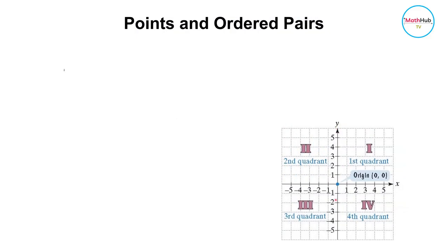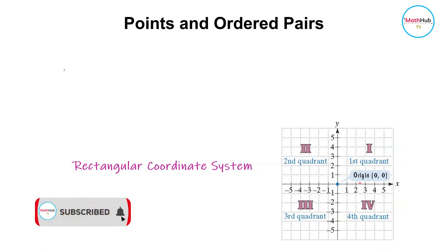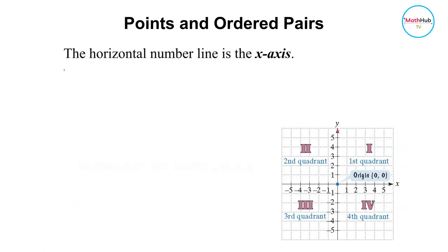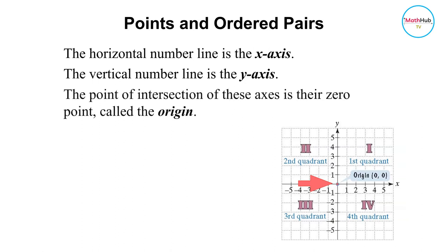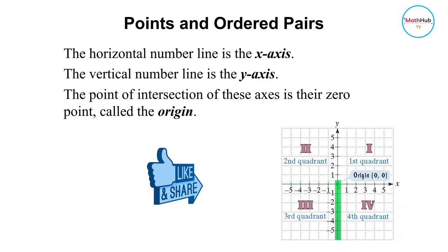The figure shown here is a rectangular coordinate system. The horizontal line is the x-axis, while the vertical line is called the y-axis. The point of intersection for these axes is called the origin. The negative numbers are shown to the left of the x-axis and below the origin. The numbers above the origin and to the right of the x-axis are the positive numbers.